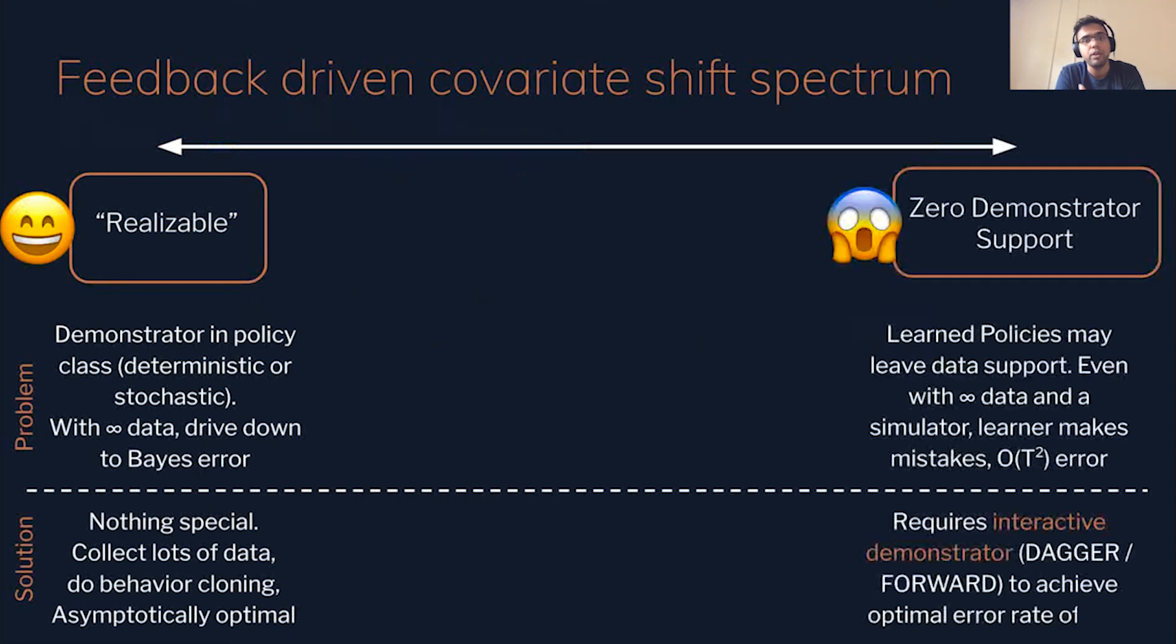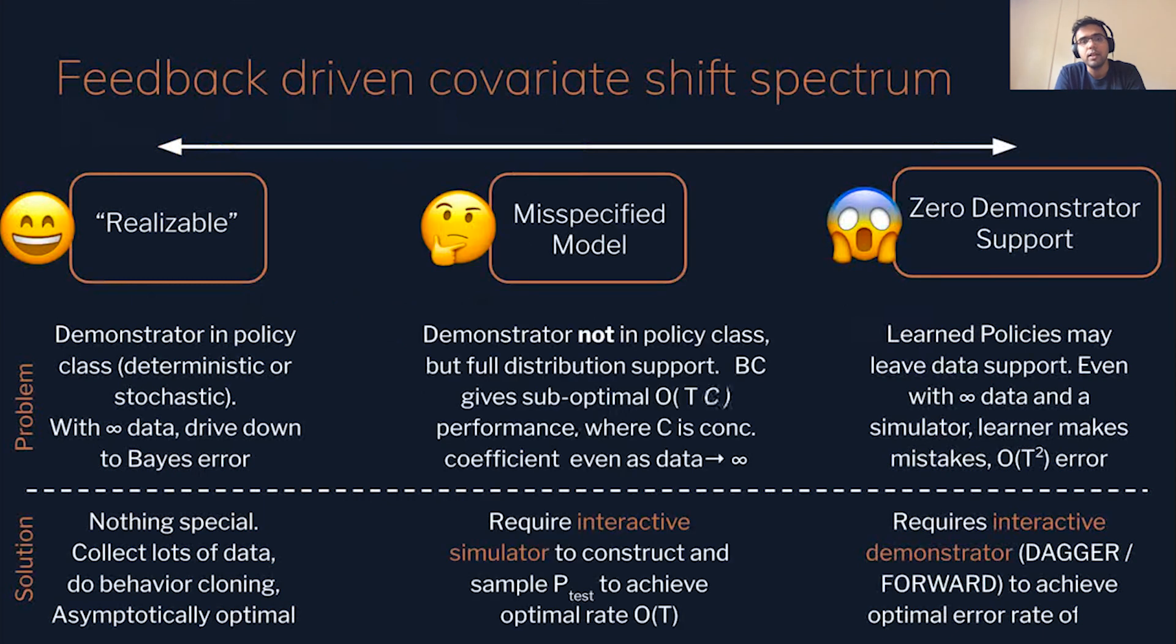On the other hand, you have hard problems where the demonstrator is not realizable. Moreover, the learner leaves the data support. So even with infinite data, the learner ends up in these novel states that have no labels and continues making errors, eventually hitting an OT squared error. Your only recourse is to query interactive demonstrators, which Arun was talking about earlier. But there are these interesting problems in the middle where the demonstrator is not realizable, but has full support. So you can still do behavior cloning, but you won't drive down to Bayes error. You get this suboptimal performance because the data is not uniformly concentrated on the test distribution. This is just a very simple fix. Use an interactive simulator to construct the test distribution. We can then adjust for this covariate shift and eventually achieve optimal OT error rate.